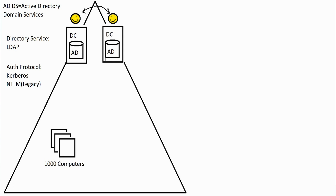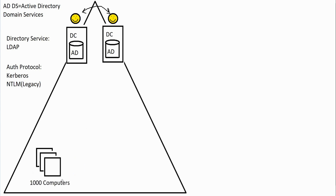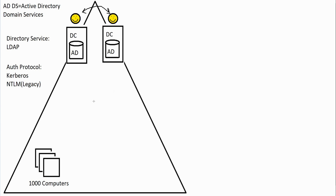All of this is decades old at this point. At the time it came out it was cutting edge, but it is a bit dated nowadays. It still works and is still pretty secure, though there are some security considerations. One important aspect of Active Directory is that all machines must have a name associated with an IP address, so we use a service called DNS — Domain Name Service.